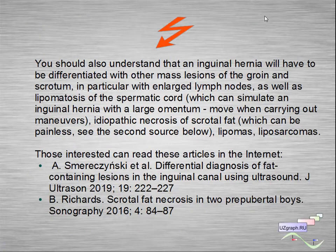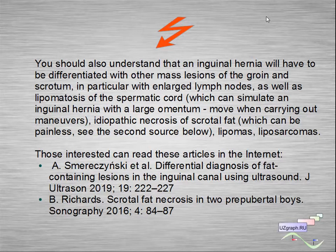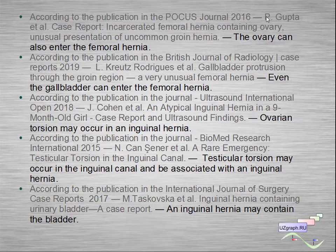You should also understand that an inguinal hernia will have to be differentiated from other mass lesions of the groin and scrotum — in particular with enlarged lymph nodes, lipomatosis of the spermatic cord, idiopathic necrosis of scrotal fat, lipomas, and liposarcomas. The ovary and even the gallbladder can also enter a femoral hernia. Ovarian torsion may occur within an inguinal hernia, and testicular torsion may occur in the inguinal canal and be associated with inguinal hernia.